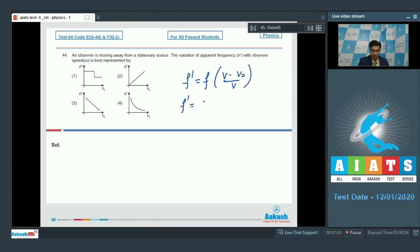That is, f' would be equal to f minus v0 by v plus f. Dear students, we can see that the equation between f' and v0 would lead to a straight line with a negative slope. And the option that correctly represents this variation is the option number 3, which is the correct answer.